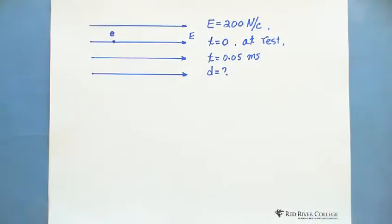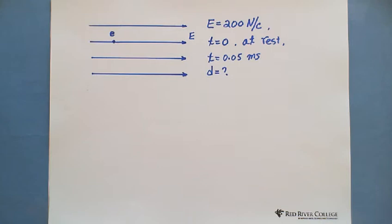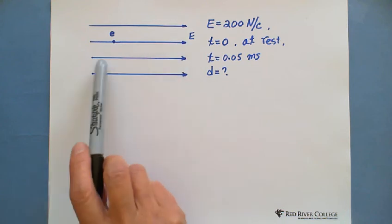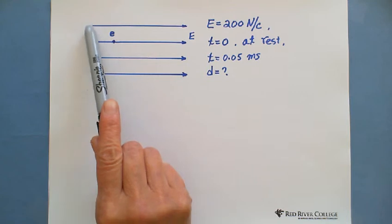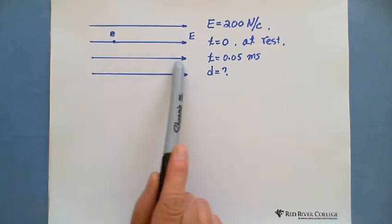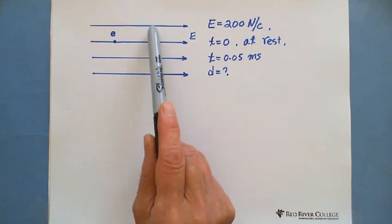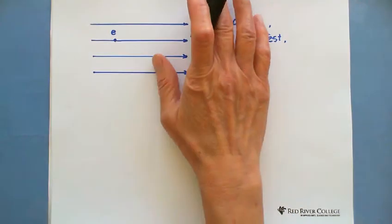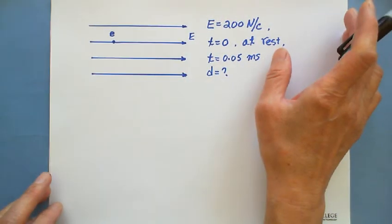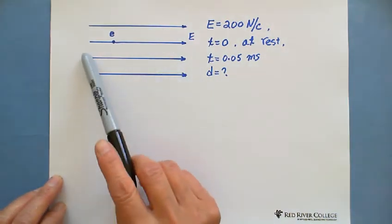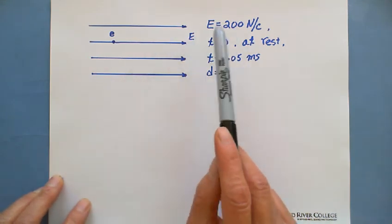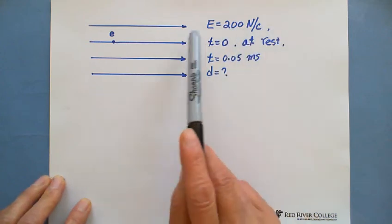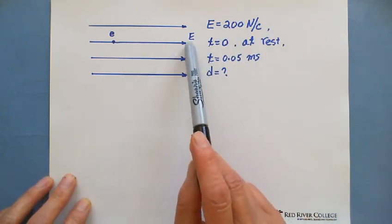This question is talking about an electron in the electric field. This is a uniform electric field. Uniform electric field means from the electric field line, we can see they have equal distance between each electric field line and also parallel. That means any place in this uniform electric field, they have the same magnitude, 200 Newton per Coulomb, and the same direction, which is going this direction.